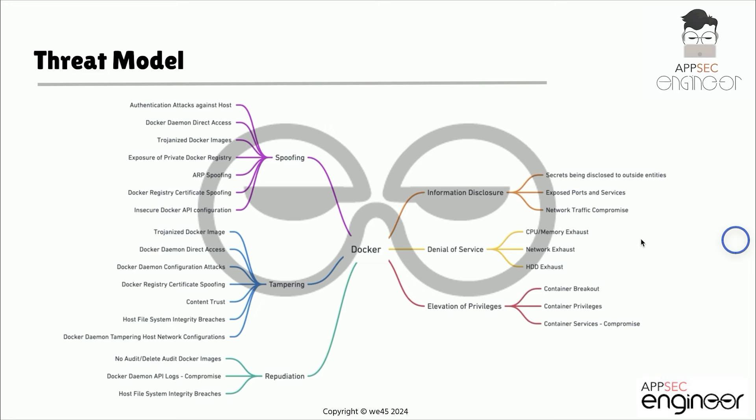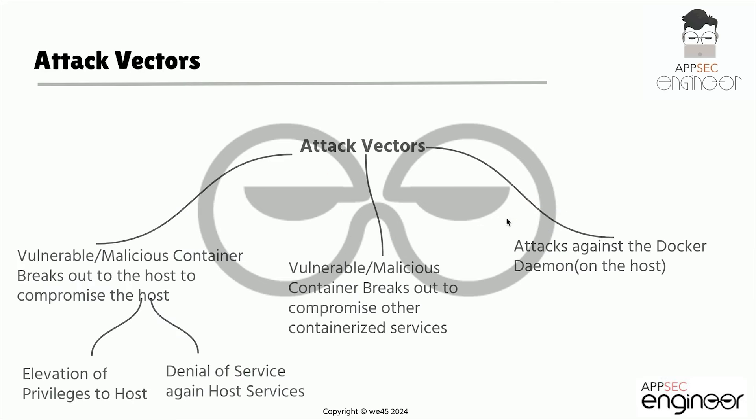We are also going to focus on container breakouts. When we talk about container breakouts, we are essentially going to break out of a container and start accessing the host resources — including the host processes, file system, and multiple other parameters. One thing you will have to be extremely careful about is exposing ports and services to the container itself. If you expose sensitive ports and services to a Docker container and that container is compromised, your host can potentially be under attack as well.